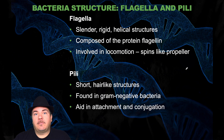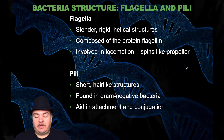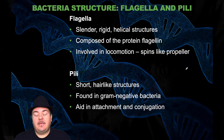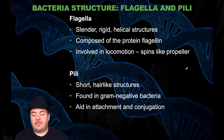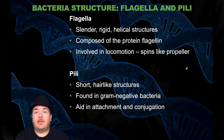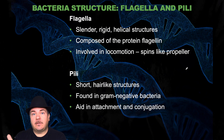You can also have pili, which are short, hair-like structures found in gram-negative bacteria. They aid in attachment of the cell to structures, and in conjugation — which we'll talk about in a later video.